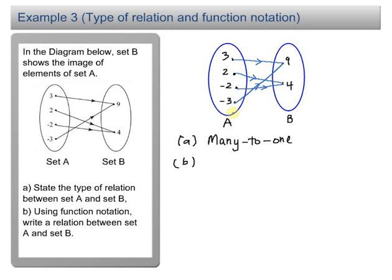To find the relation between set A and set B, you just need to do some simple analysis. You can see here 3 maps to 9 and minus 3 maps to 9. The only thing you can do is 3 squared, you have 9, and minus 3 squared, that is minus 3 times minus 3, you have positive 9.